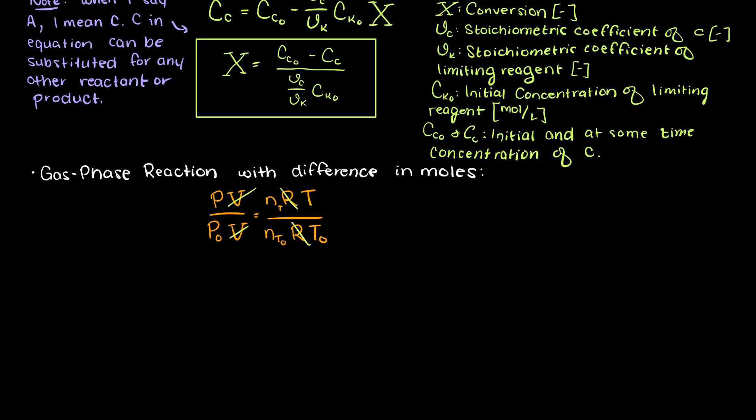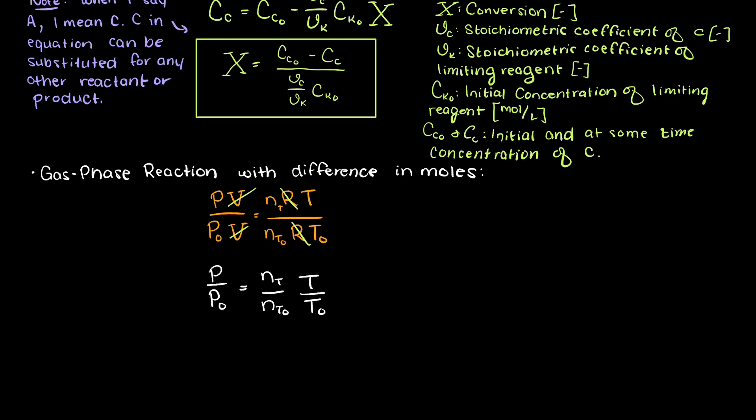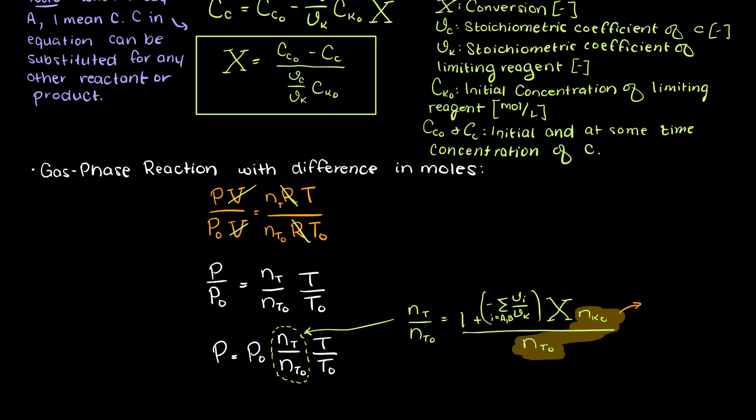Also we can cancel the volume terms as we are working in a batch reactor, and the volume of the system is fixed to the size of our batch reactor. Then we multiply by the initial pressure. Then we can use the following equation for the total number of moles in our system at a given time. This term here describes the mole change when we have one step forward in our reaction.